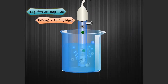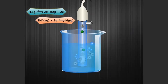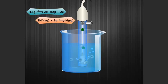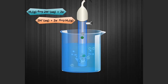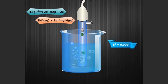Oxidation: H₂ → 2H⁺ + 2e⁻. Reduction: 2H⁺ + 2e⁻ → H₂. This reaction is assigned a Standard Electrode Potential E of 0.00V and serves as a reference.